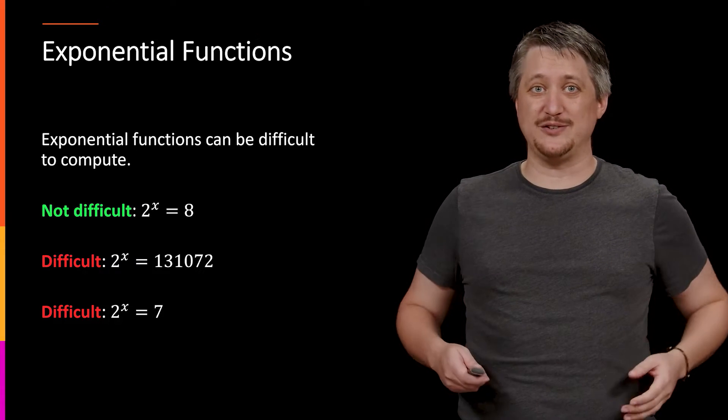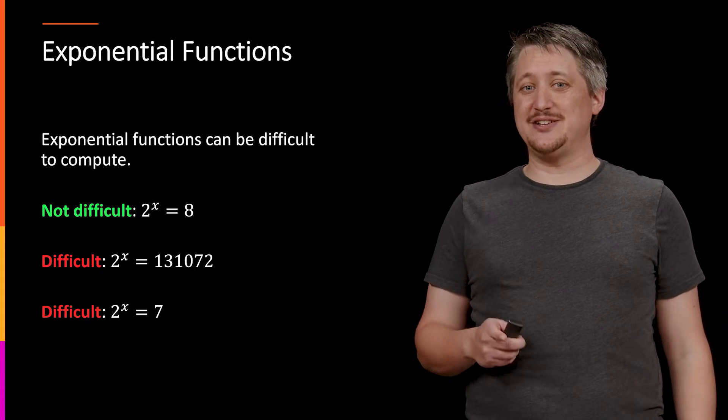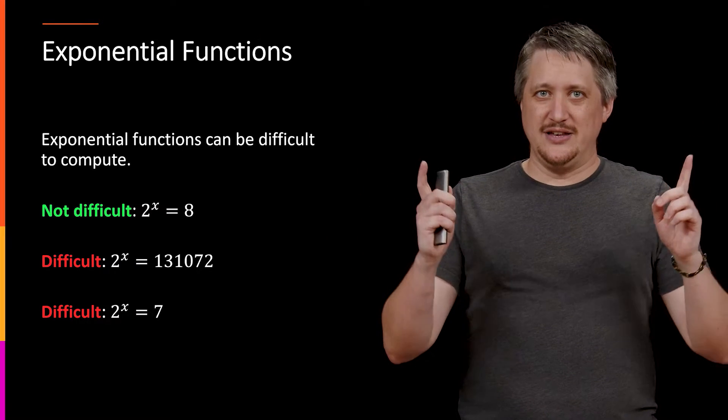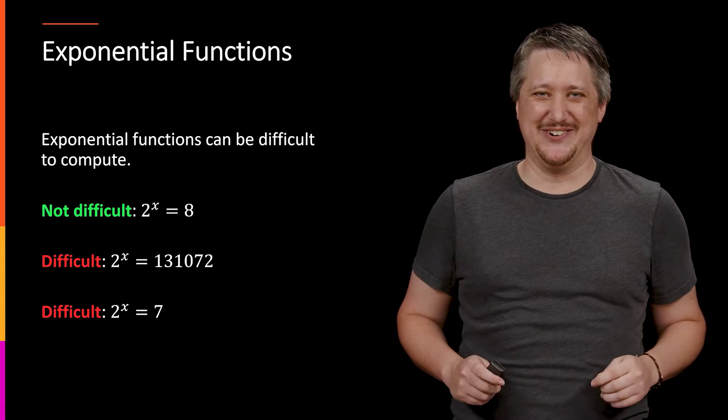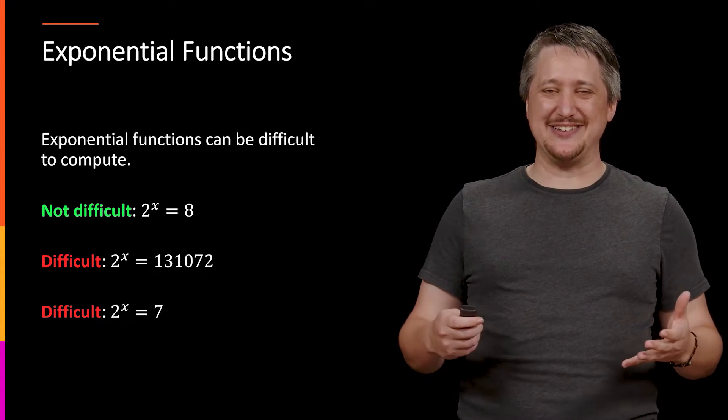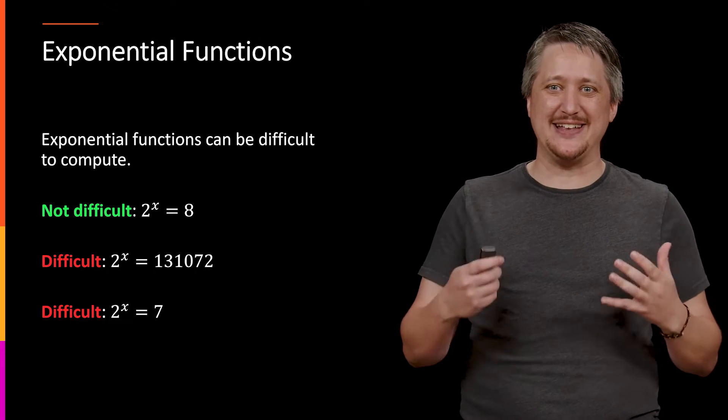For example, if we look at 2^x = 7 - 2^x = 8 is great, but 2^x = 7 is not great. That's suddenly really terrible to try to get your brain around and get an answer to.